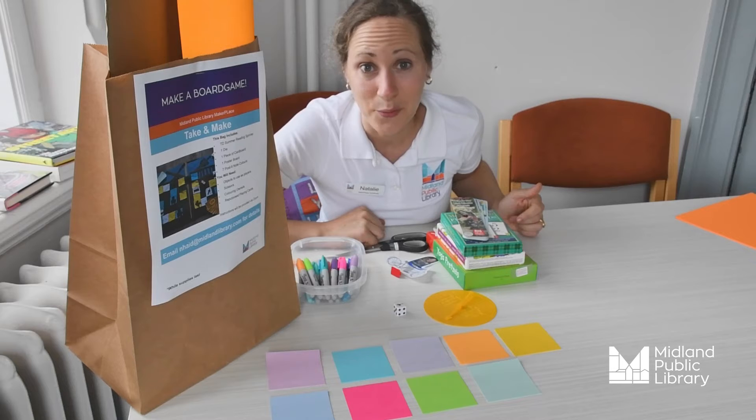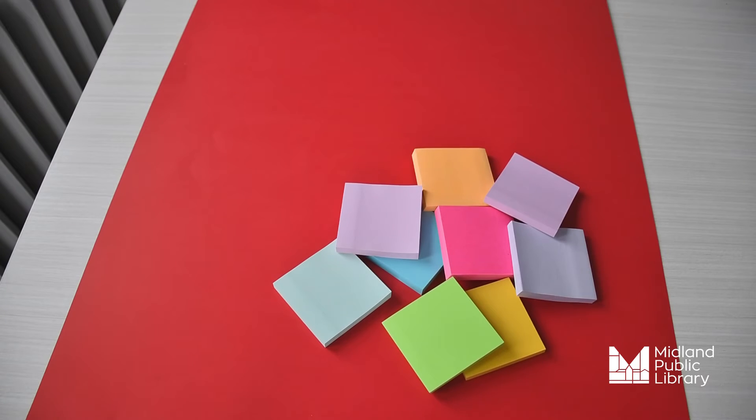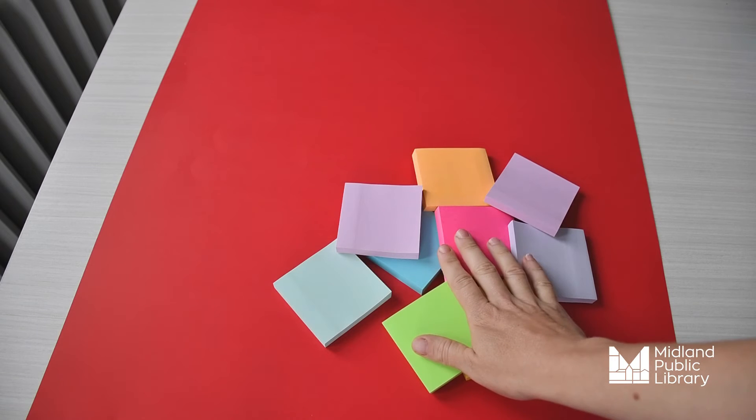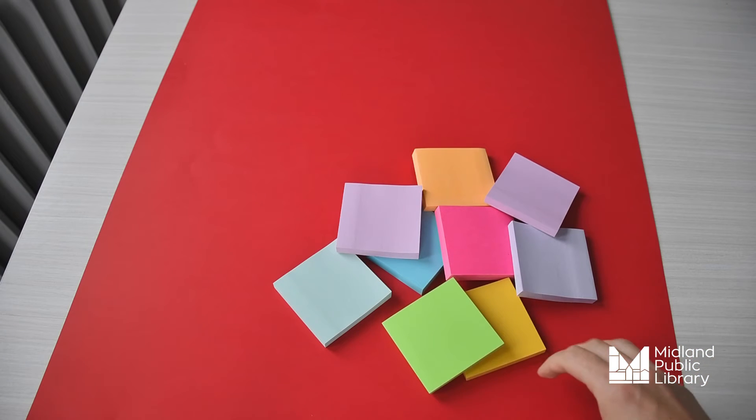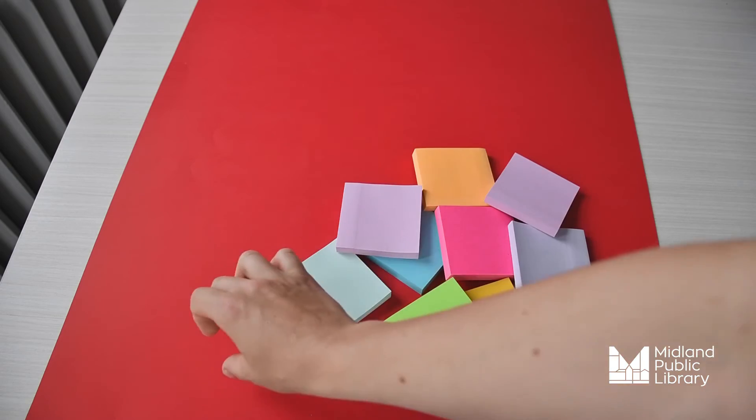Let's see what we do for week one. Step 1. You can choose to use the poster board or cardboard within your Take and Make packs as your backdrop. Or you can use both. Glue the poster board onto the cardboard. And then take the post-it notes in various colors and start to create a path with post-it notes.